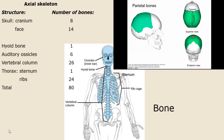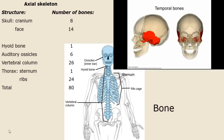There's the sagittal suture — we're looking down on it in the superior view, and in the posterior view we're looking behind it. The lambdoid suture is the line that separates the occipital from the parietal, and the squamous suture separates it from the temporal bone.